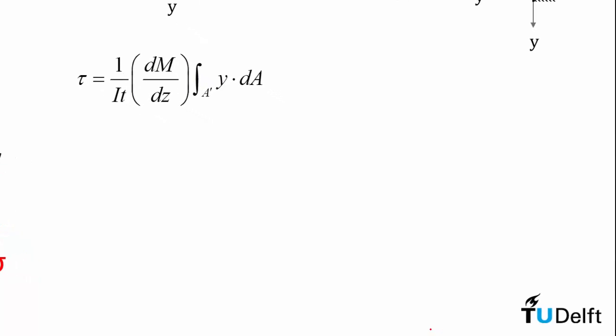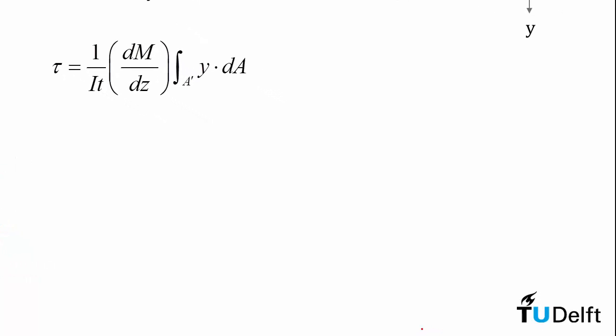If we take a closer look at this result, there are some simplifications that we can make. First, we can recall that the variation in internal bending moment with distance along the beam, or dm over dz, is precisely equal to the internal shear force V. So we can take this and substitute it in.